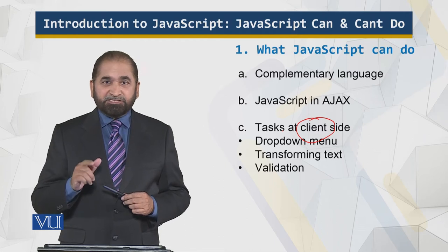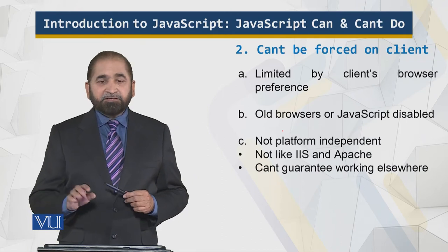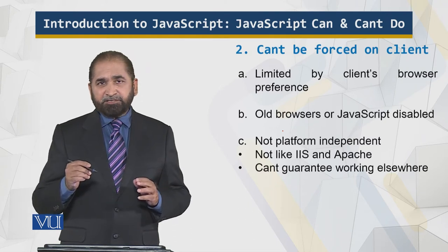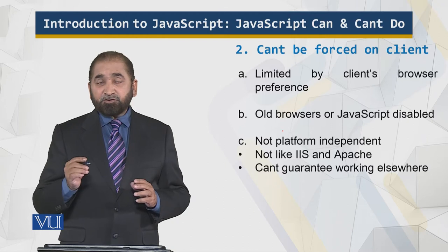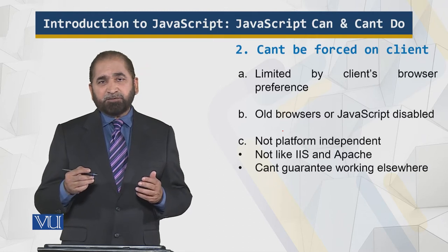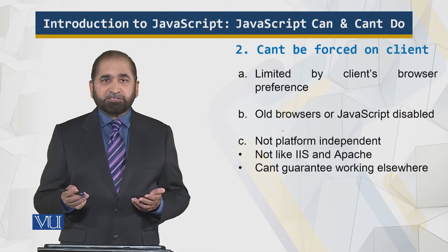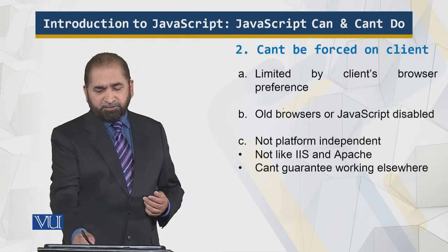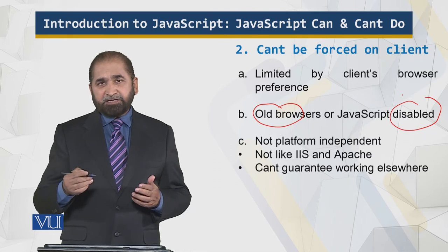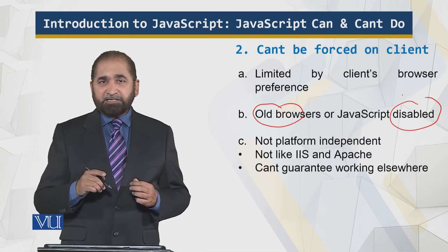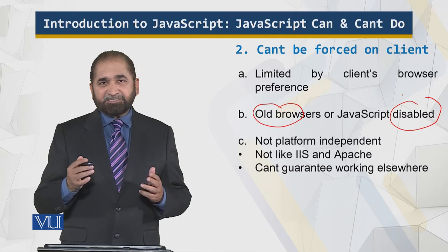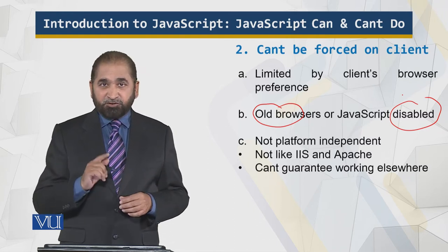What are the things which JavaScript cannot do? JavaScript is limited by the client's browser preferences — whether or not to even allow JavaScript to run at the client end. The client may be using an old browser that does not support JavaScript, or the client has disabled it. It is a choice of the client. It is unlike Java or standard programming languages with which you can develop entire complex systems.